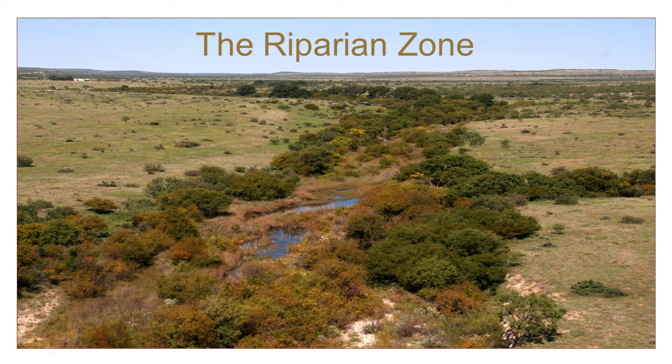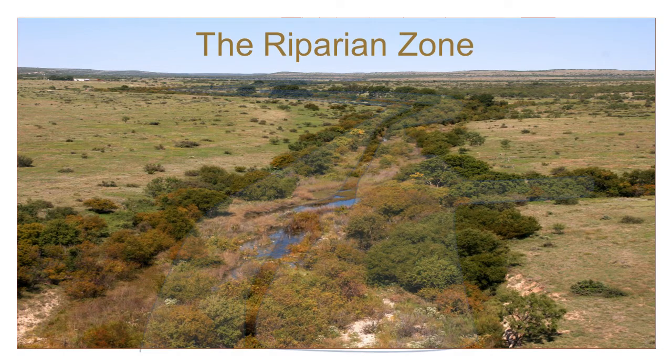But first, let's make sure we have a common understanding of what riparian means. This is a term that has really only come into common usage in Texas in the past 10 to 15 years, even among land management professionals. A riparian area, or zone, is the part of the landscape that flanks rivers and streams, shown in blue on this picture.